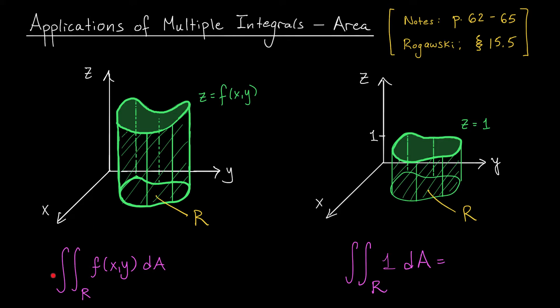Remember, if we're computing the double integral of a function z equals f(x,y), whose graph lives above a region r in the xy plane, then what we're really doing is finding the volume under our surface and above that region r. That's the interpretation of our double integral.